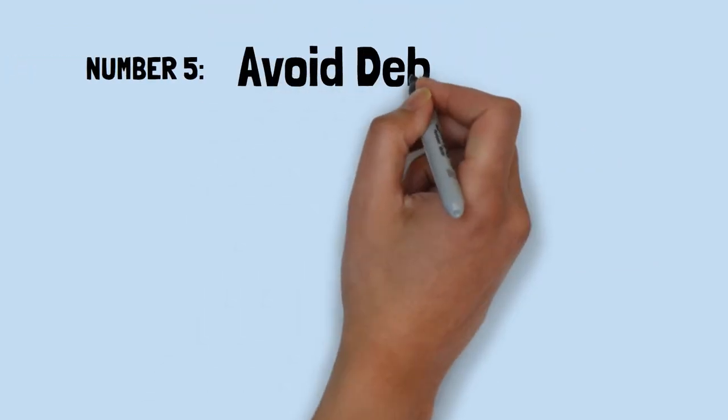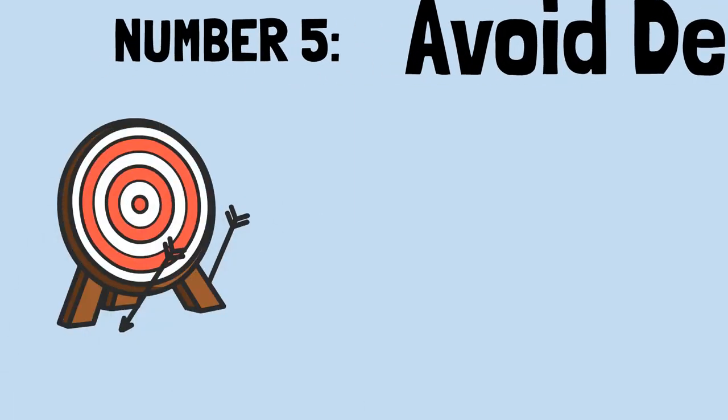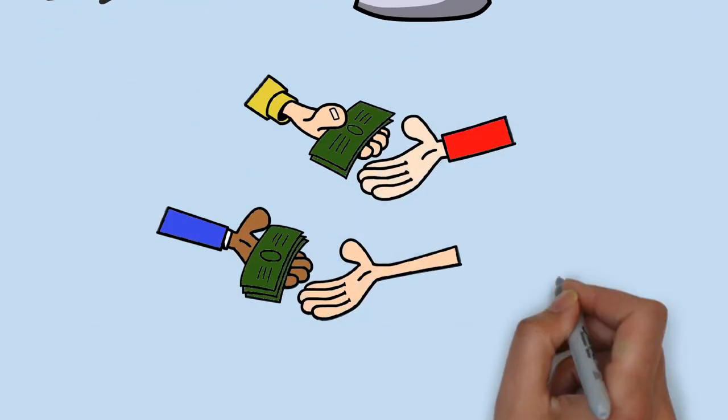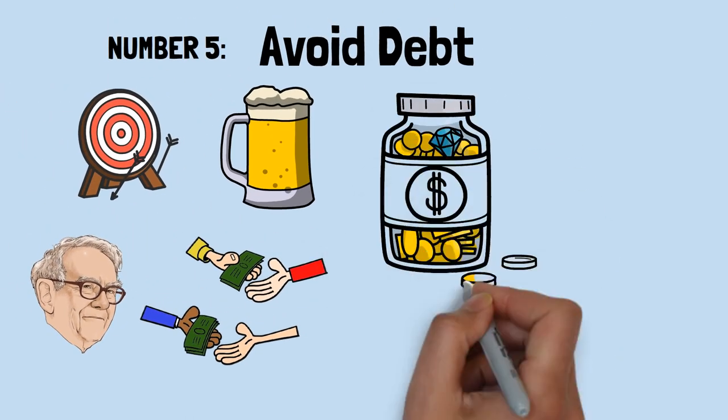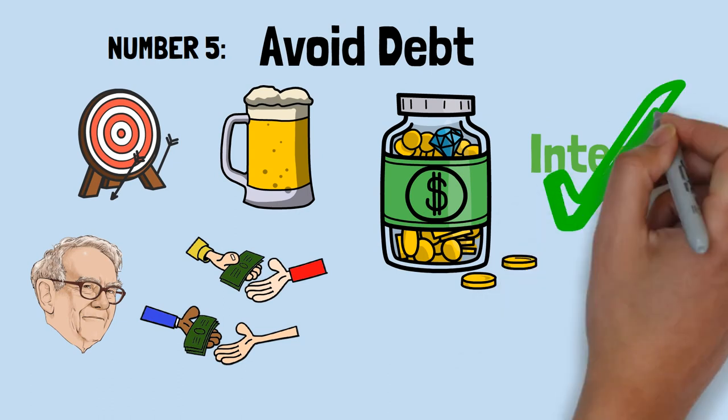Number five. Avoid debt. I've seen more people fail because of liquor and leverage, leverage being borrowed money, says Buffett. Warren Buffett has built his wealth by enabling interest to work for him, not against him.